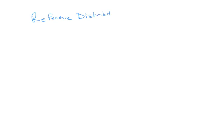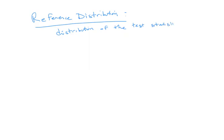Now that we know what a distribution is, let's define one more term before we do an example: the reference distribution. Just like we first defined statistic and then defined test statistic as the statistic we use for our test, we now define reference distribution as the distribution we'll need for our test. In particular, the reference distribution is the distribution of the test statistic, crucially assuming that our null hypothesis is true. Under the assumption that the null hypothesis is true, we find the distribution of the test statistic — that is, we list all the possible values of the test statistic along with their probabilities.